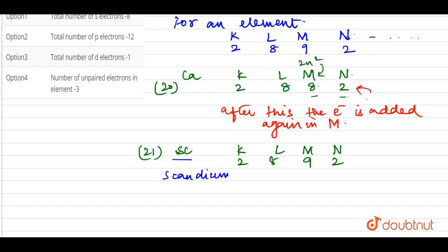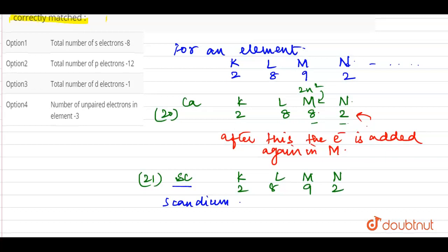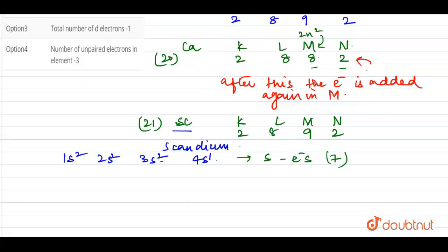Scandium has atomic number 21. Now we have to check which statements are correct. The first option is: total number of S electrons are 8. For Scandium, we have 1s, 2s, 3s and 4s orbitals present. In 4s there is one electron, and in the remaining three S orbitals there are 2 electrons each. So total S electrons are 7. The first statement is incorrect. The second statement says total number of P electrons are 12. Looking at which P orbitals exist, we have 2p and 3p present; 4p is not present.